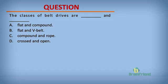Question 1: The classes of belt drives are ___ and ___. A. Flat and compound. B. Flat and V-belt. C. Compound and rope. D. Cross and open. The correct option is A: flat and compound.